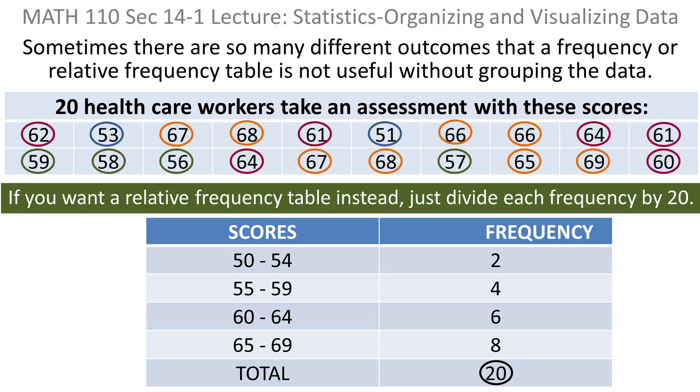If you wanted to turn that into a relative frequency table, all you do is divide each frequency by this total, which is 20. And you get the probabilities. So if I divide 2 by 20, 4 by 20, 6 by 20, 8 by 20. If you're going to leave them as fractions, you need to make sure they're completely reduced. And that would be the relative frequency table.